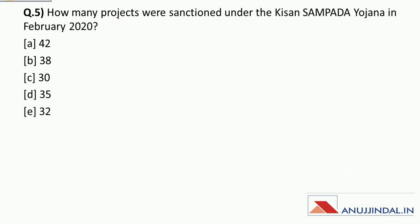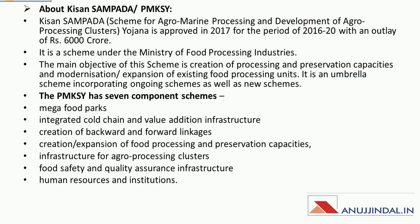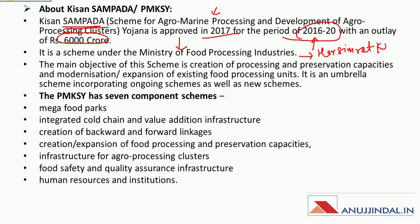Last question: How many projects were sanctioned under Kisan Sampada Yojana in February 2020? PM Kisan Sampada Yojana (PM KSY) was launched in 2017 for the period 2016–20. SAMPADA stands for Scheme for Agro Marine Processing and Development of Agro Processing Clusters. It was launched with an outlay of rupees 6000 crore under the Ministry of Food Processing Industries headed by Harsimrat Kaur Badal. Its main objective is creation of processing and preservation capacities and modernization or expansion of existing food processing units.